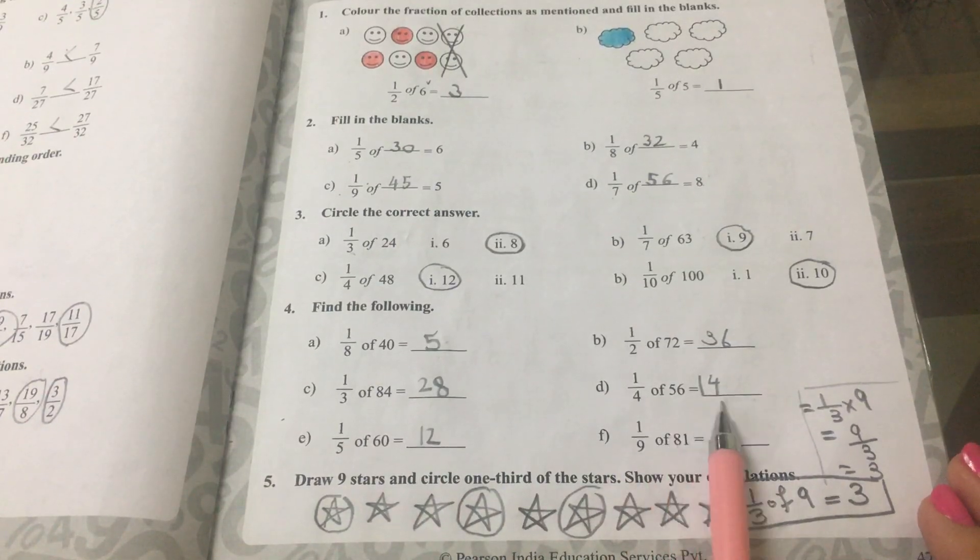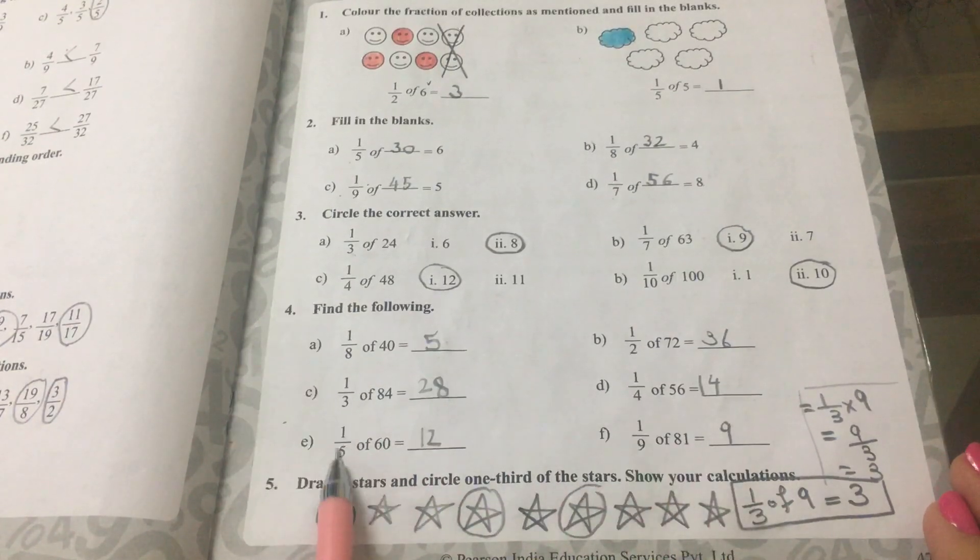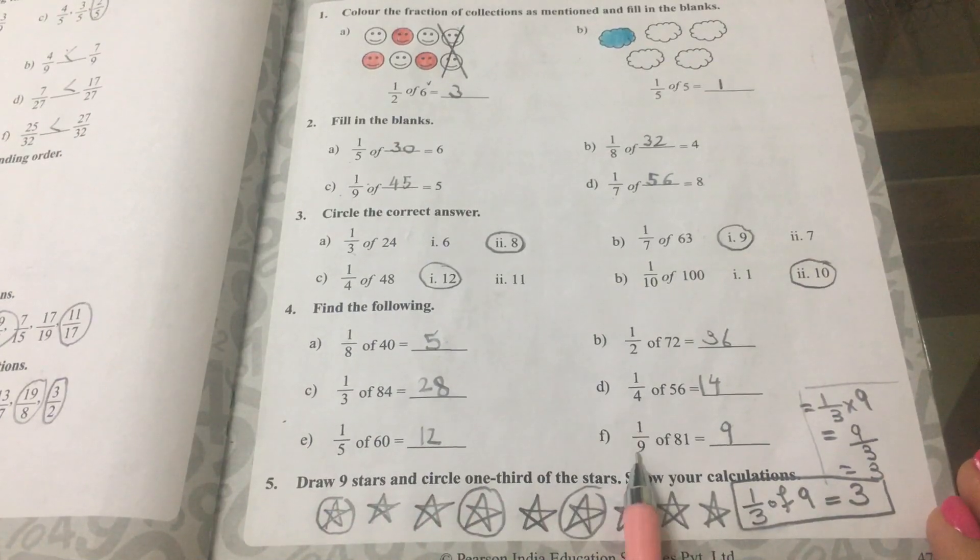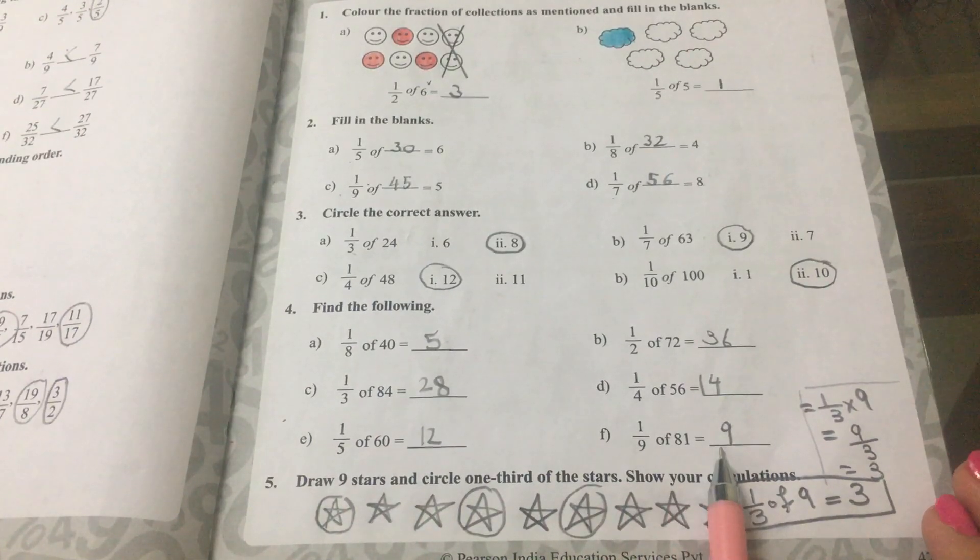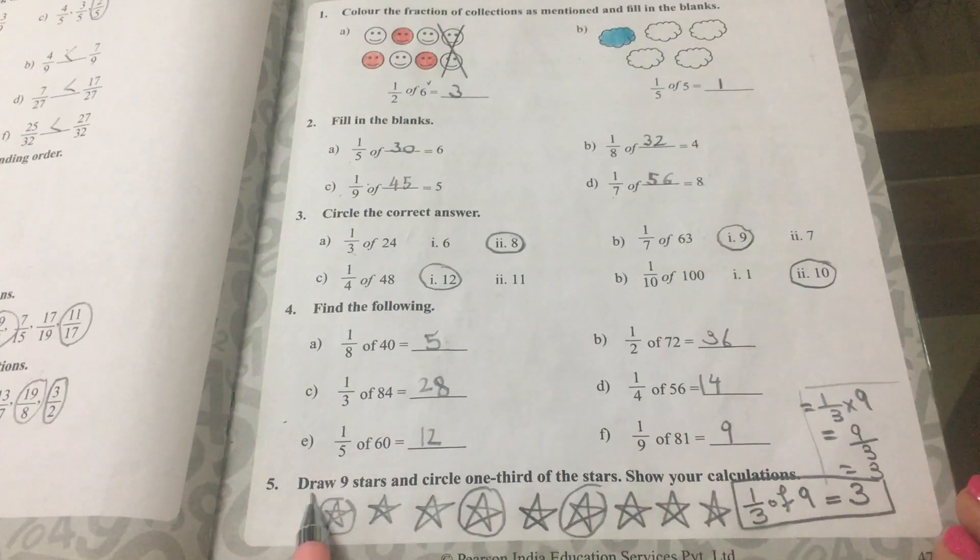D, 1 fourth of 56 equals to 14. E, 1 fifth of 60 equals to 12, and F, 1 ninth of 81 equals to 9.